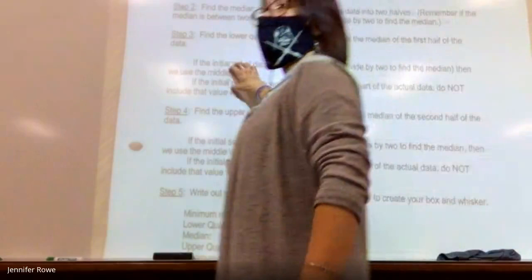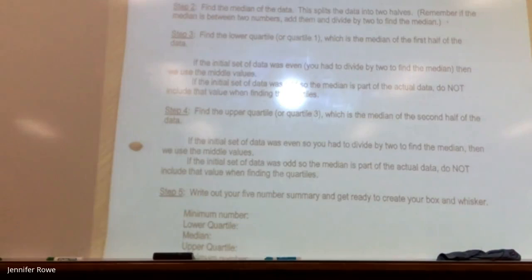Now, this is kind of important. You're going to want to keep this kind of tucked away in the back. If the initial set of data was even, you had to divide by two to find the median, then we use the middle values. If the initial set of data was odd, so the median is part of the actual data, do not include that value when finding the quartile. So I'll show you what that means. But know that there are a couple of special rules and that they're on the front of your paper.